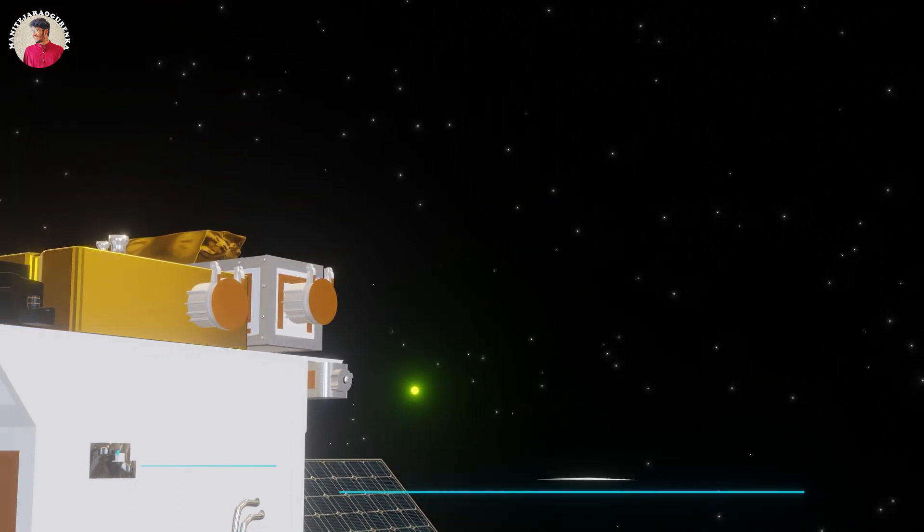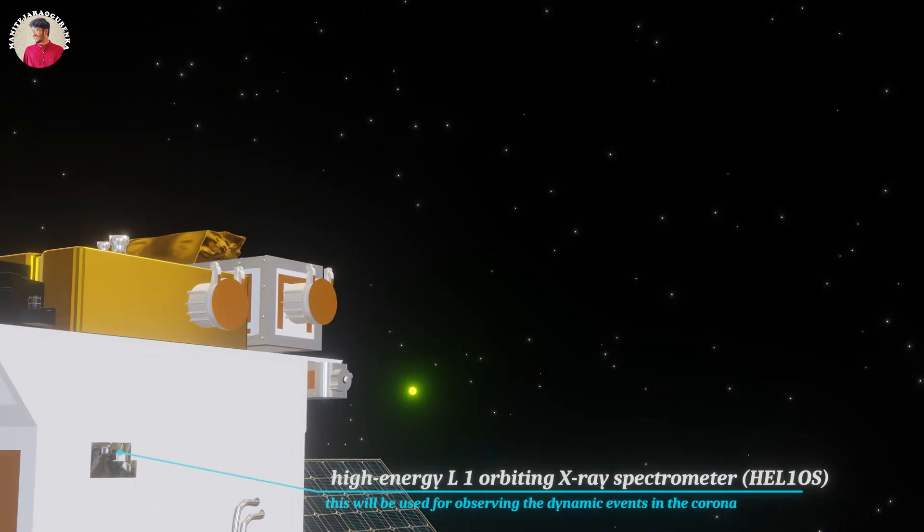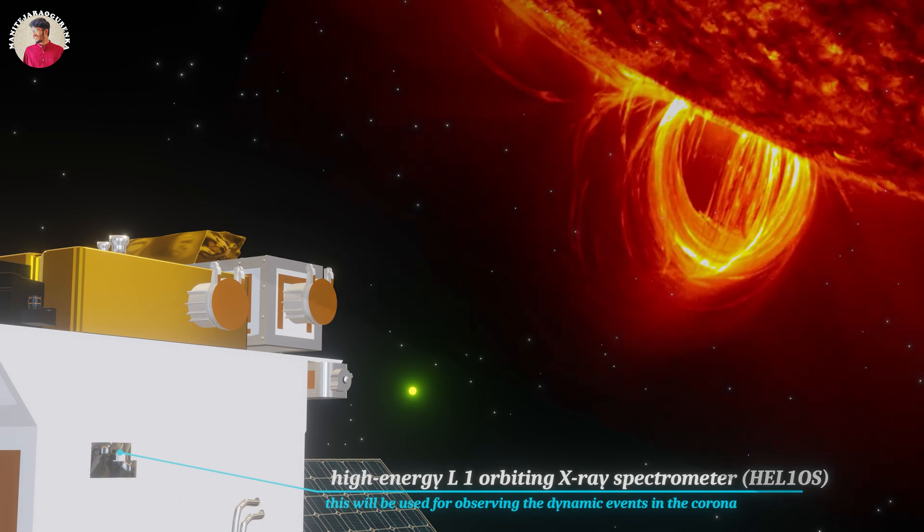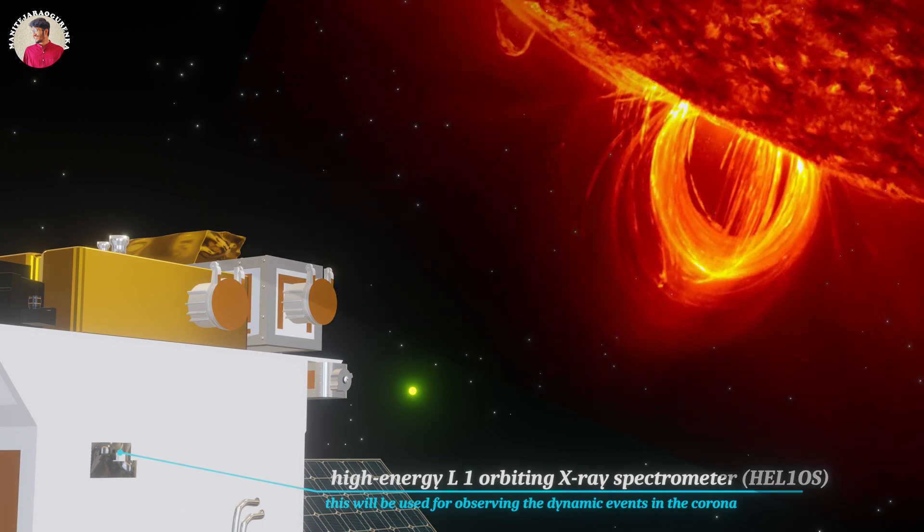Sixth, a high-energy L1 orbiting X-ray spectrometer, HEL1OS, that will be used for observing the dynamic events in the corona.